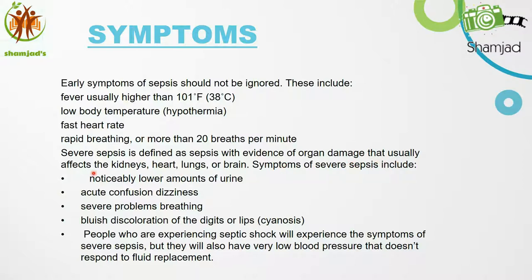Severe sepsis is defined as sepsis with evidence of organ damage, which usually affects the kidney, heart, lungs, or brain. Symptoms of severe sepsis include a noticeably lower amount of urine (oliguria), acute confusion, dizziness, severe problems with breathing, low discoloration meaning cyanosis of the digits or lips. People experiencing septic shock will also have very low blood pressure that doesn't respond to fluid replacement.